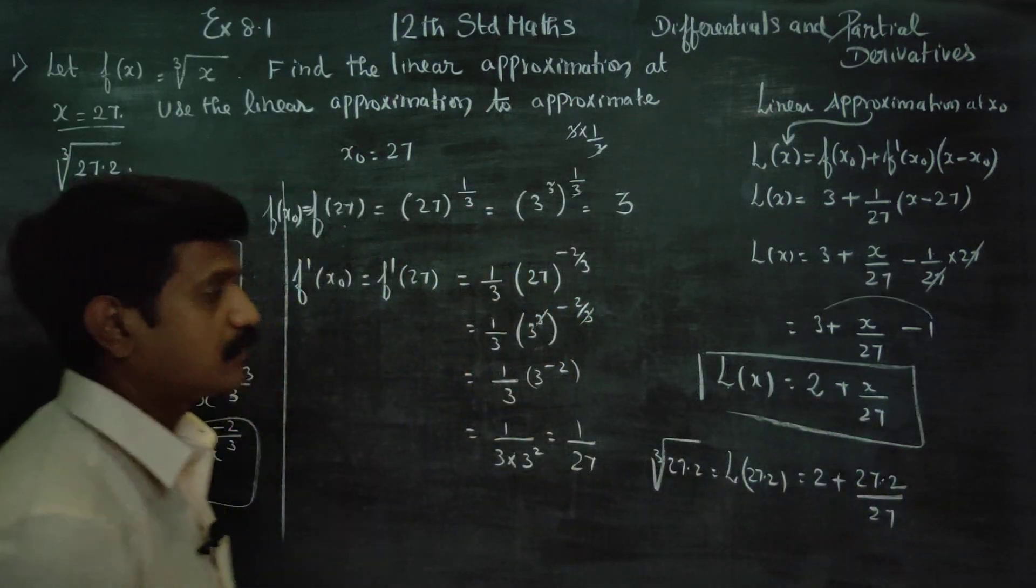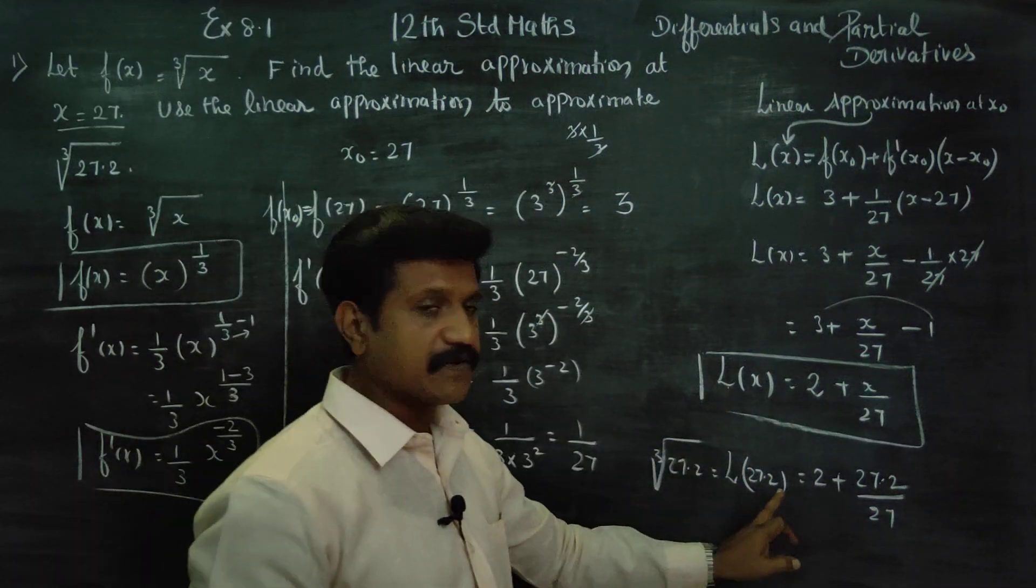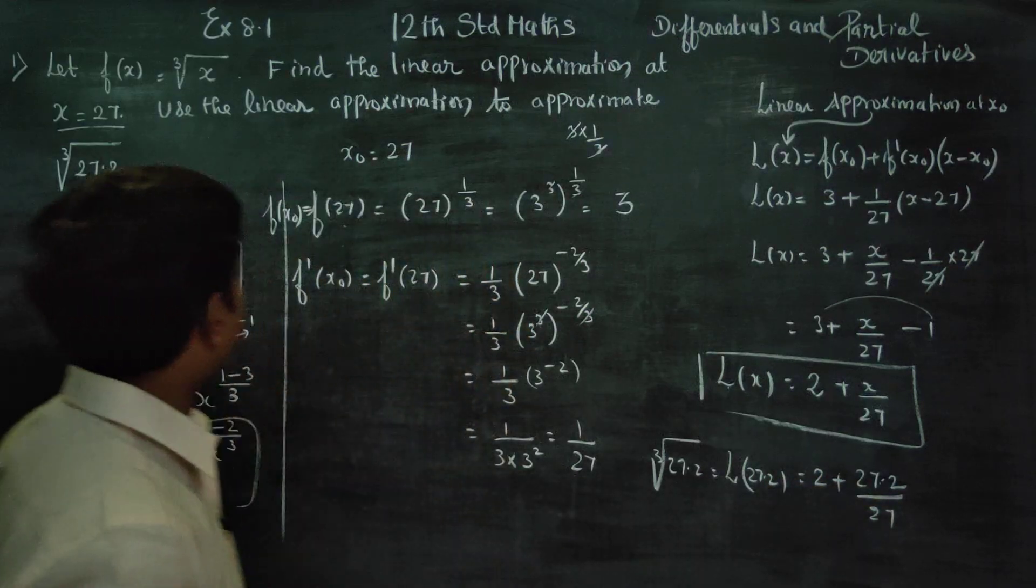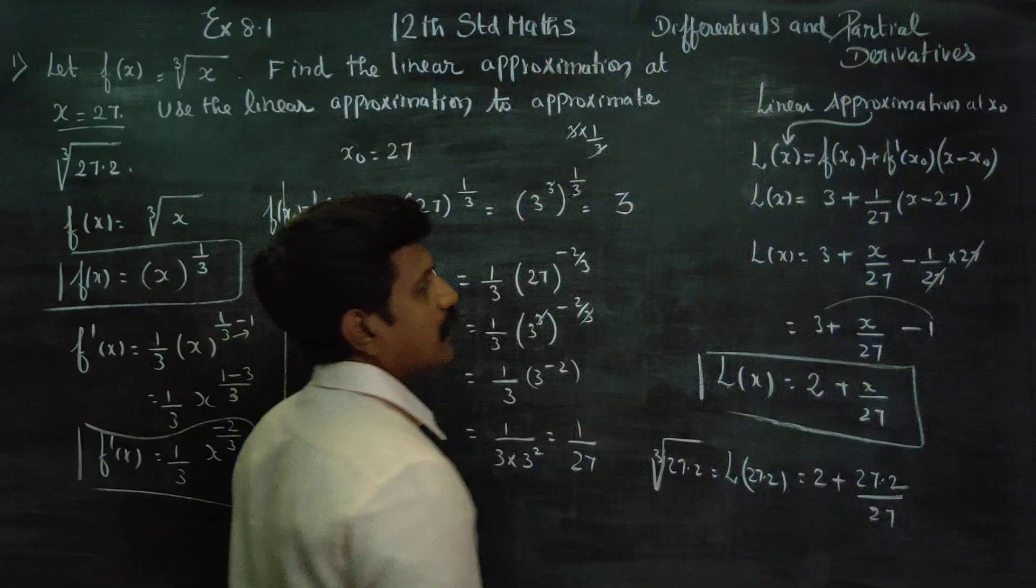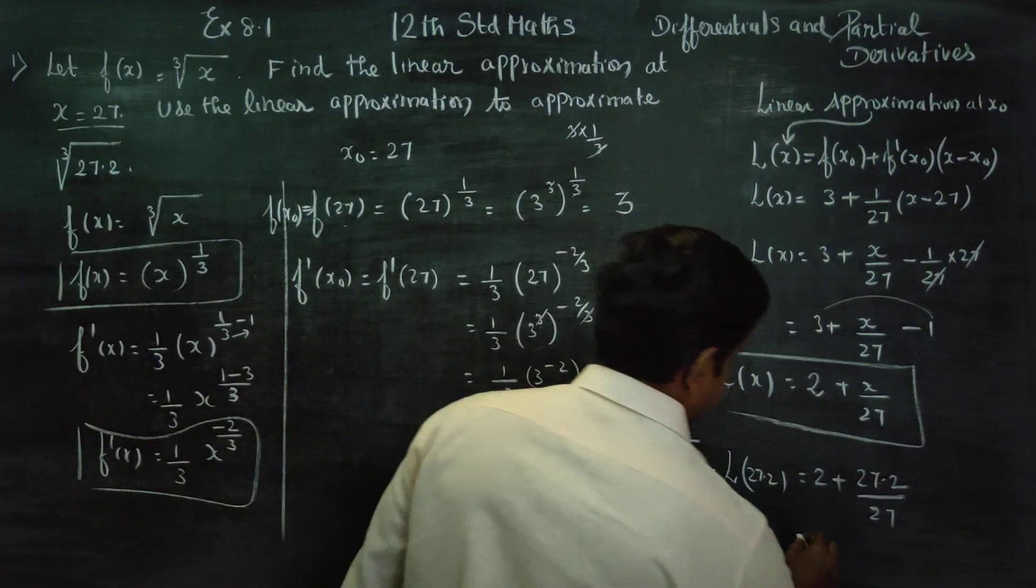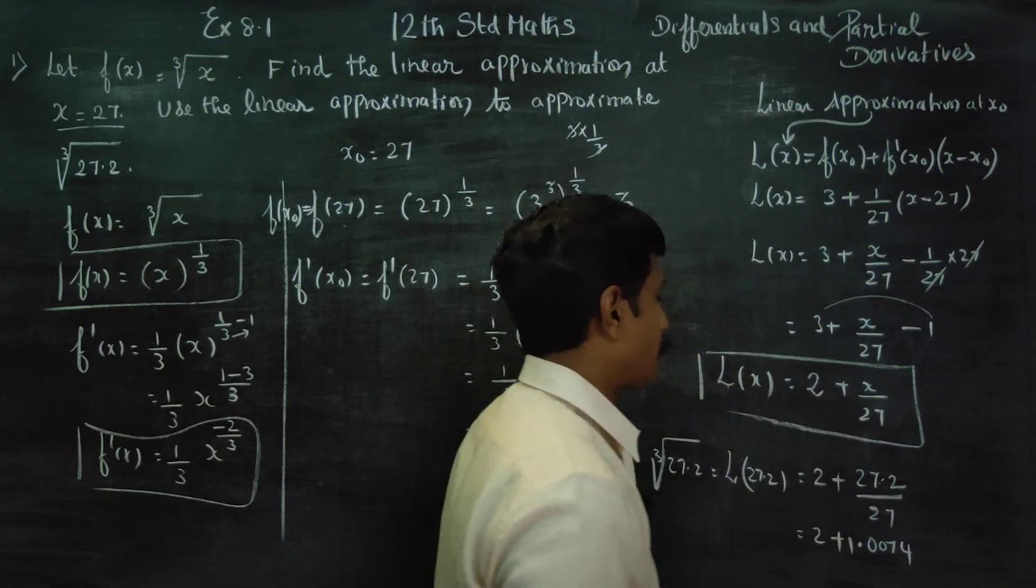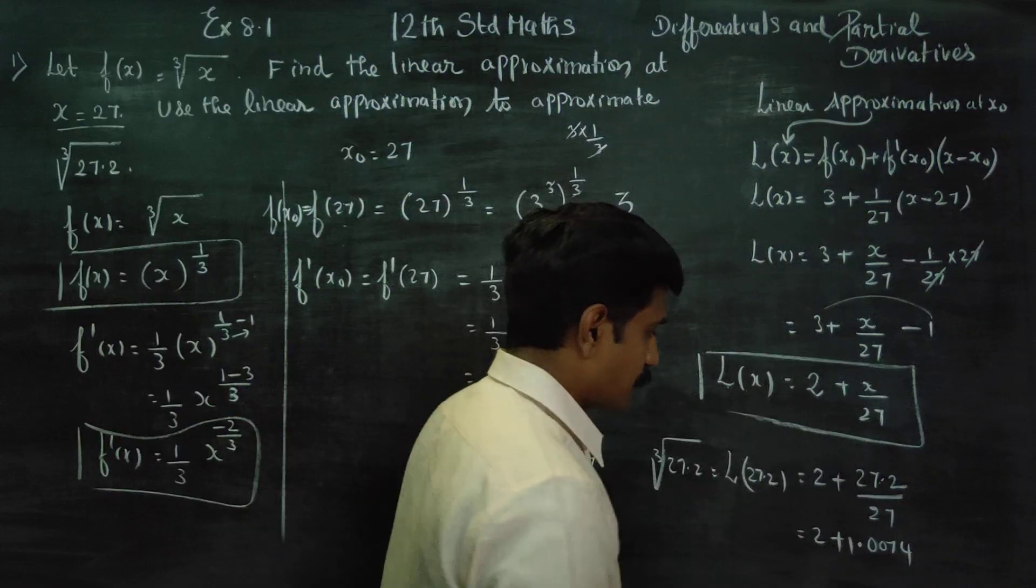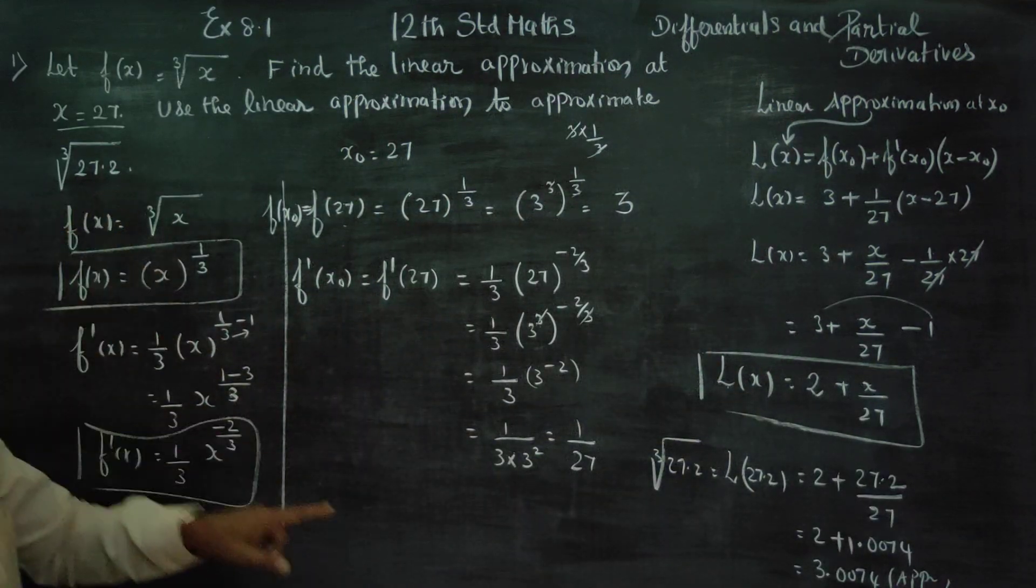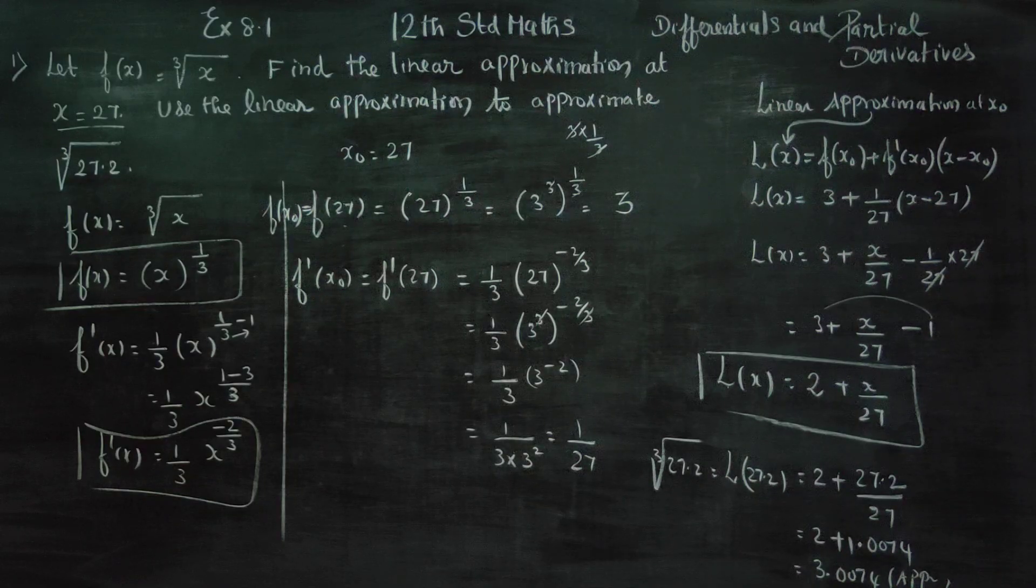You substitute x equals 27.2 into the formula. When you substitute 27.2, you get the approximate value. This equals approximately 3.0074. So cube root of 27.2 approximately equals 3.0074. This is the approximate value using linear approximation method.